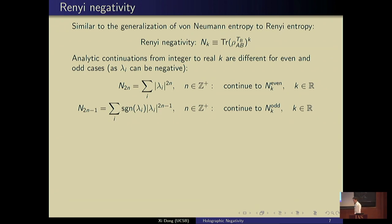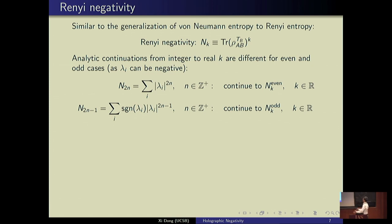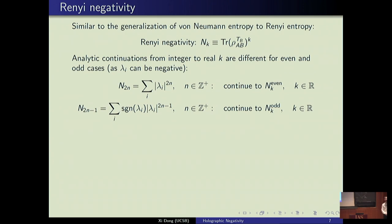It is very easy to generalize negativity — just as we generalize von Neumann entropy to Rényi entropy, we can generalize negativity to a Rényi version by computing the trace of the k-th power of the transposed density matrix. One reason to be interested in this is that it provides a way of understanding ordinary negativity as a limit of Rényi negativity via analytic continuation in k back to k = 1, though the analytic continuation is subtle, and the even and odd cases must be discussed separately.